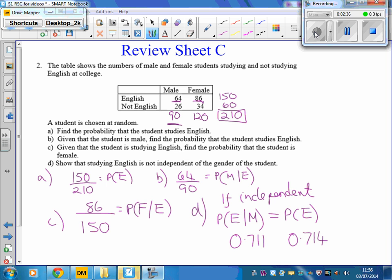Close, but not exactly the same. That is 150 over 210. And they are not equal, which would imply not independent.